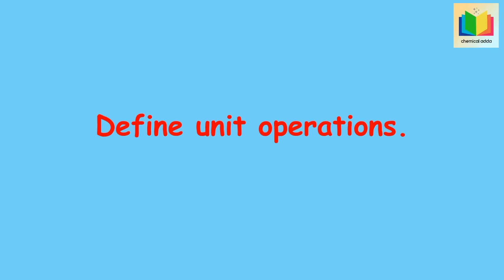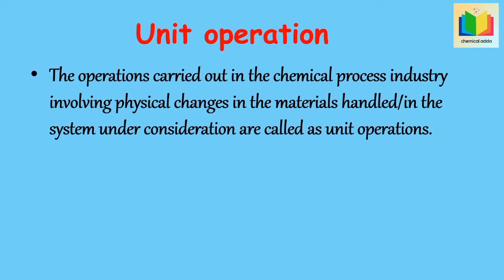Define unit operations. The operations carried out in the chemical process industry involving physical changes in the materials handled or in the system under consideration are called unit operations. These are physical in nature. Each single operation, such as distillation, can be used in a wide range of industries under varying operating conditions.